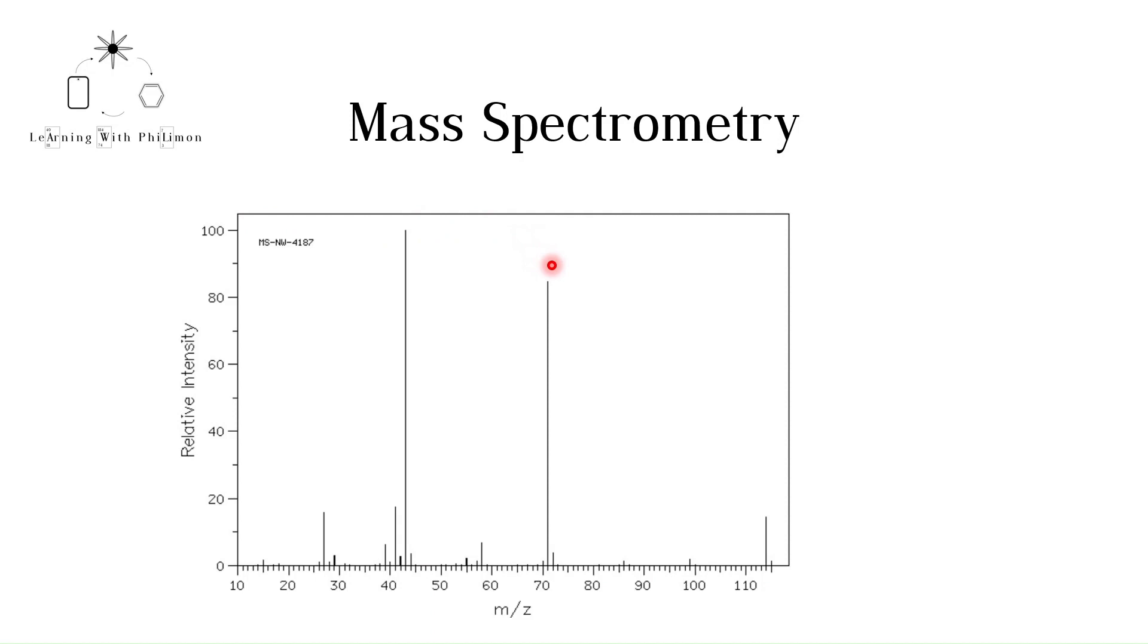This is the mass spectrum of 4-heptanone. 4-heptanone has a molecular formula of C7H14O, and the following skeletal formula. Remember that step 2 in mass spectrometry is ionization. If you want to test your knowledge, pause the video now and name the other 4 steps.